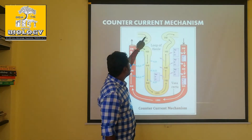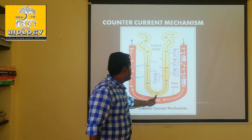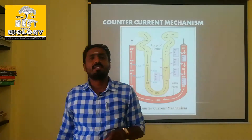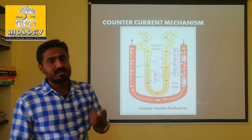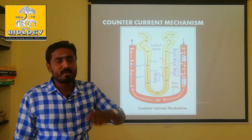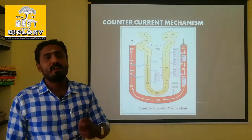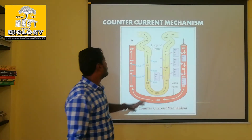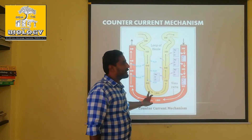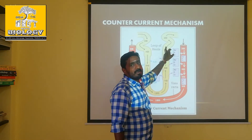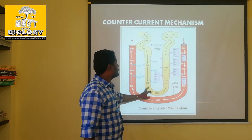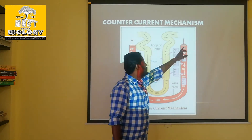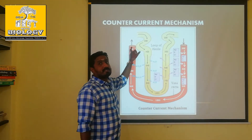The Loop of Henle maintains a concentration gradient — an extra-long solute concentration maintainer. Concentrated urine will be produced during Henle's loop process. The Henle's loop process has a descending loop and an ascending loop.